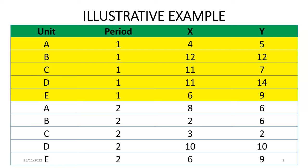The first way to understand this is to plot these data sets. I'm going to plot A, B, C, D, E in period one for each firm.